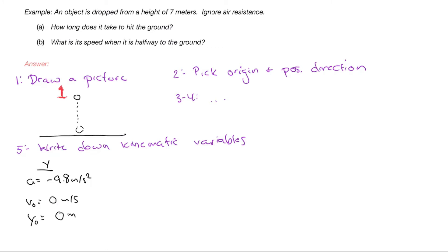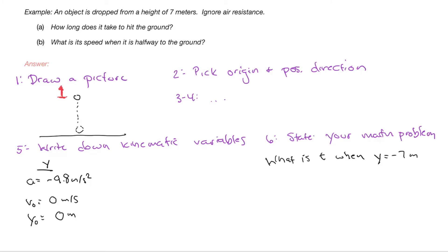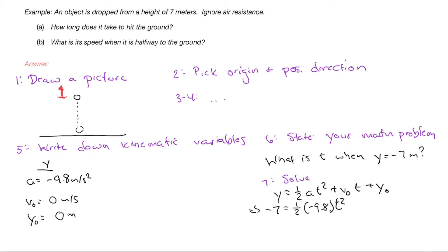Step six — often the most complicated part — is to state your problem in mathematical terms. The question 'how long does it take to hit the ground?' becomes: what is t when y equals negative 7? That's appropriate because the ground is 7 meters below the origin, so it's at position negative 7. Step seven is to use my mathematical skills to solve. I write out y equals one-half a t squared plus v-naught t plus y-naught, substitute in values, simplify, and solve for t, getting 1.2 seconds.